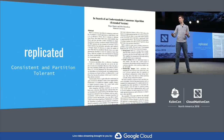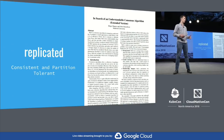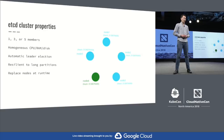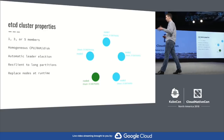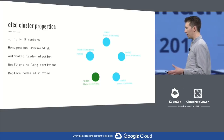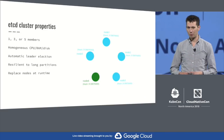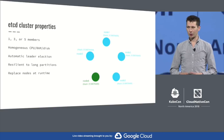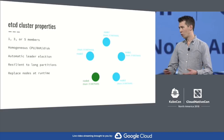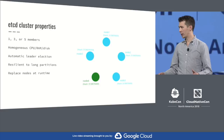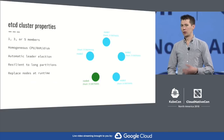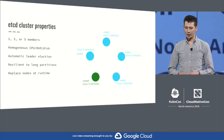The important property of etcd is that it's replicated. It's consistent and partition tolerant, and it uses this algorithm called Raft. A etcd cluster looks something like this. You have three to five members, and they're homogenous, meaning that there's really no difference in the attributes of the members in the cluster. And then the fancy property is that there's automatic leader election, so that if one or two of these machines running etcd fails in the cluster, you can continue to read and write to the database as you'd expect.